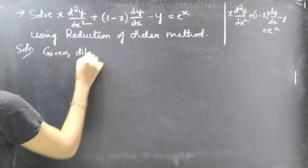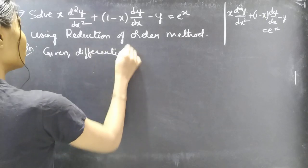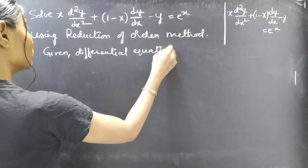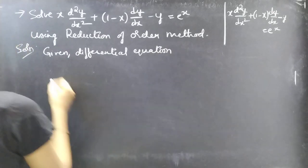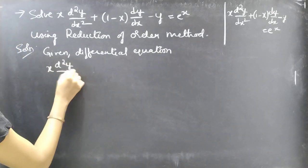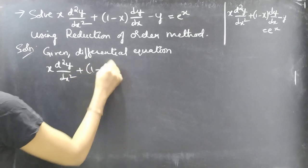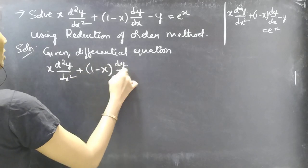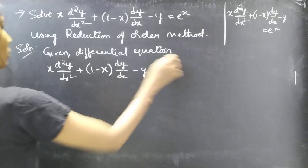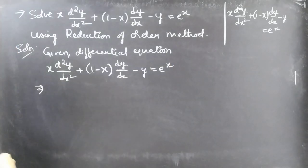The given differential equation is: x · (d²y/dx²) + (1 − x) · (dy/dx) − y = e^x.